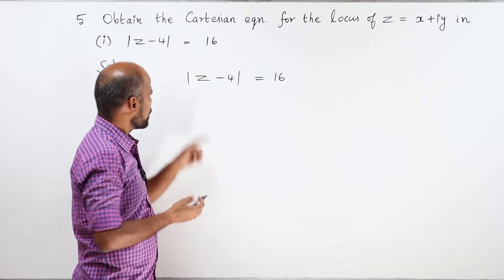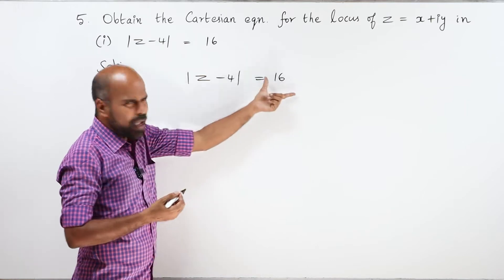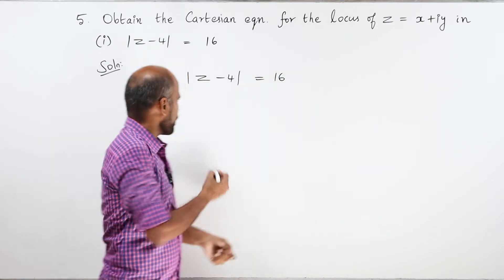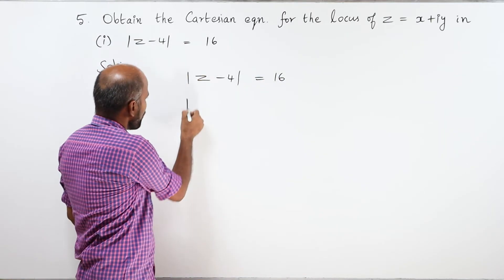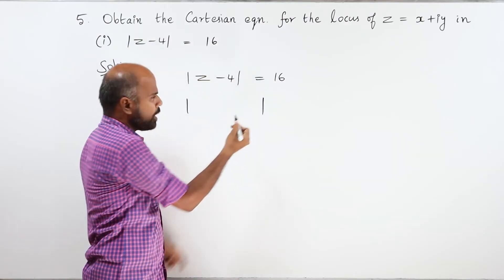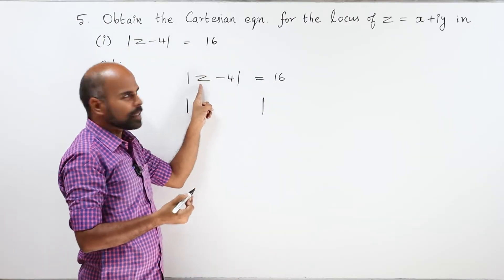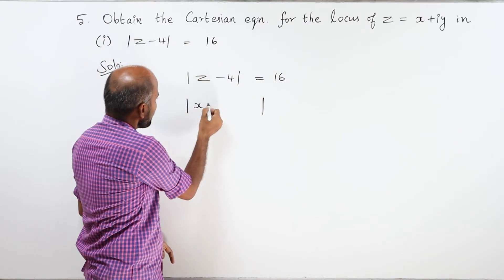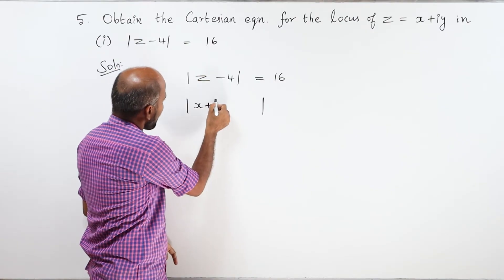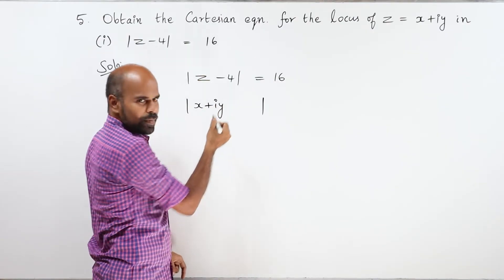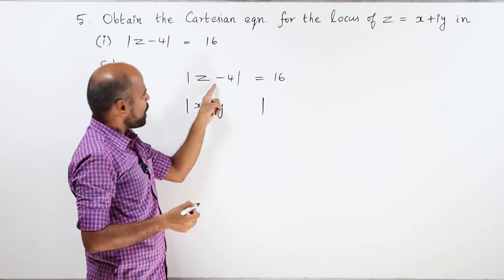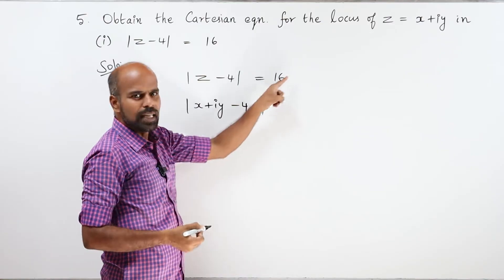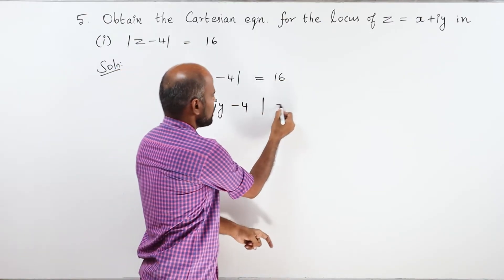Now let us proceed. z is equal to x plus iy. Then modulus of z minus 4 is equal to 16.